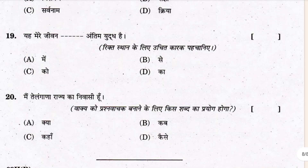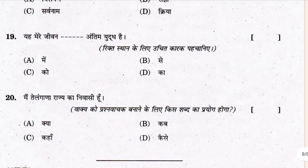This paper ends here. The example sentence given is: 'Main Telangana raj kanivashi ho' — meaning 'I am a resident of Telangana state.'